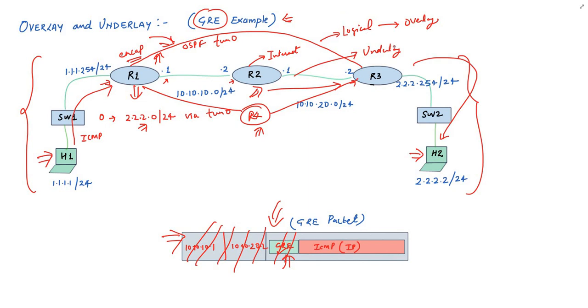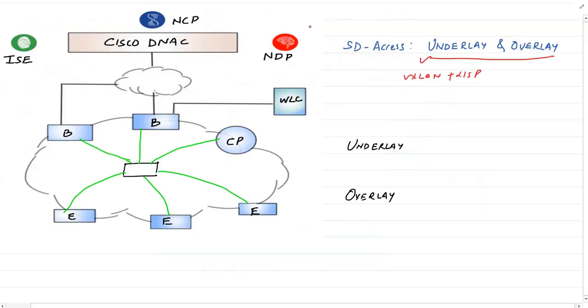The point-to-point GRE tunnel between R1 and R3 is the overlay network. So, overlay is the virtual network running over physical network or underlay.